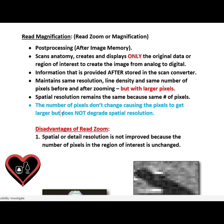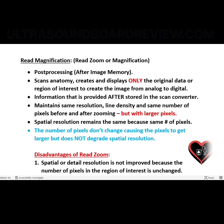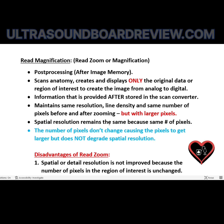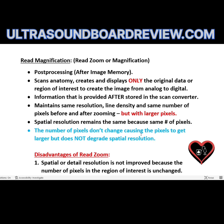Read magnification is also called read zoom or just magnification. This is a post-processing function that provides information after the data is stored in the scan converter. What read zoom does is it scans the anatomy and creates and displays only the original data from the region of interest to create the image when it goes from analog to digital.